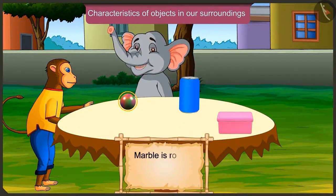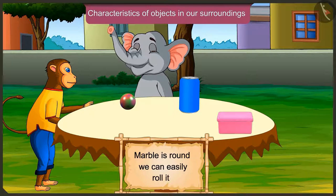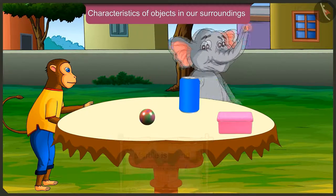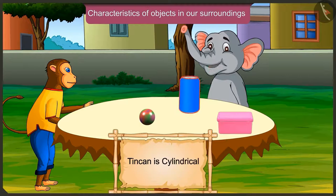Look, this marble is round. We can easily roll it like this. And as you can see, this tin can is cylindrical.